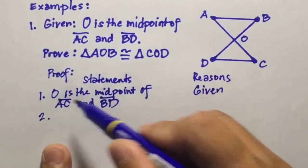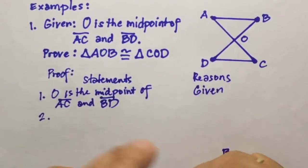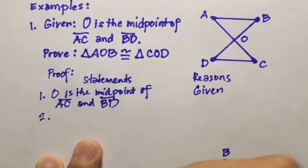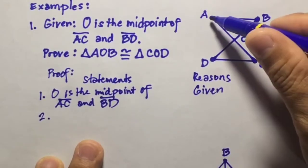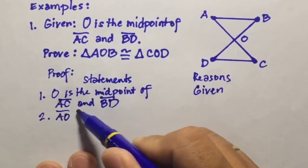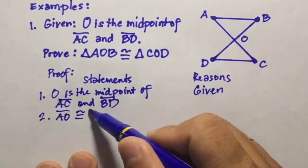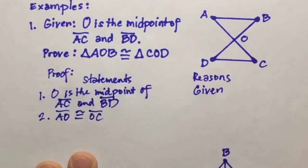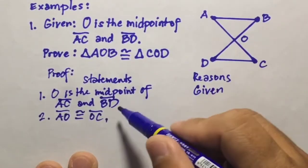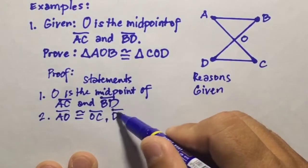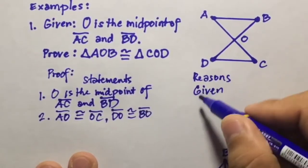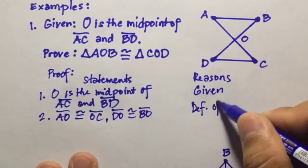Since O is the midpoint of AC and BD, it means that this point divides the two segments into two congruent parts. For AC, we can have line segment AO is congruent to line segment OC. And for line segment DB, we can have line segment DO is congruent to line segment BO. The reason is the definition of midpoint.